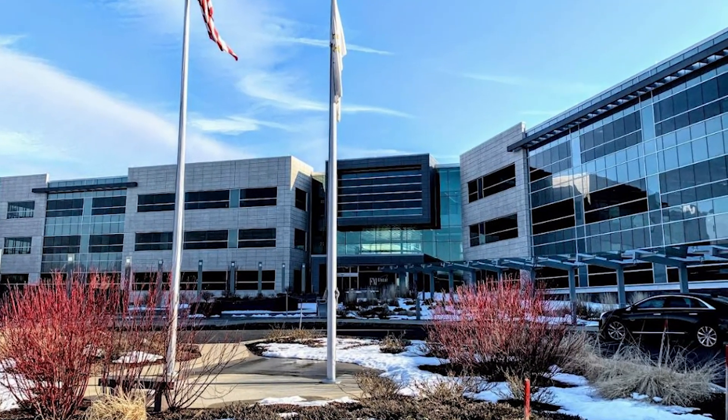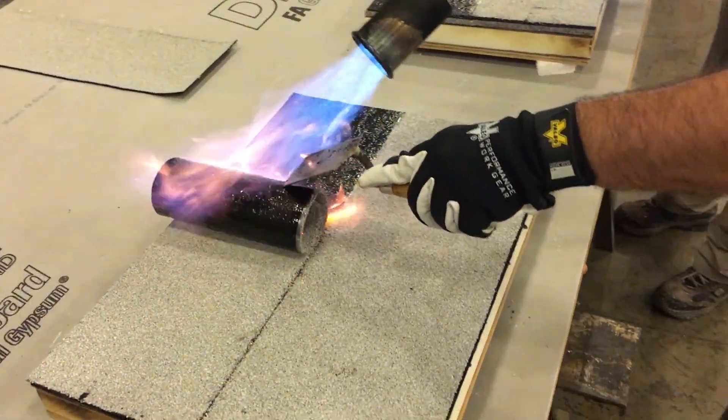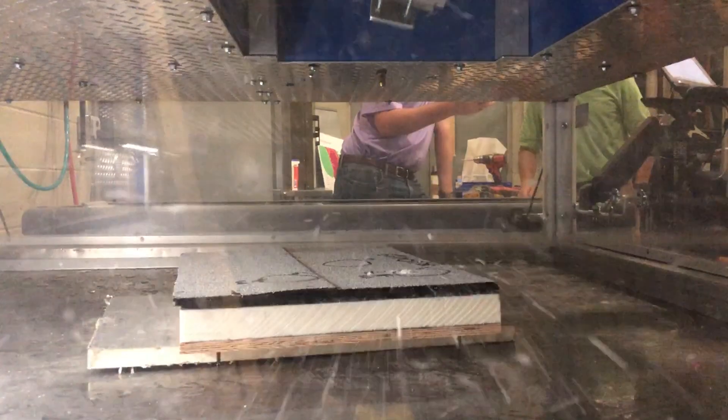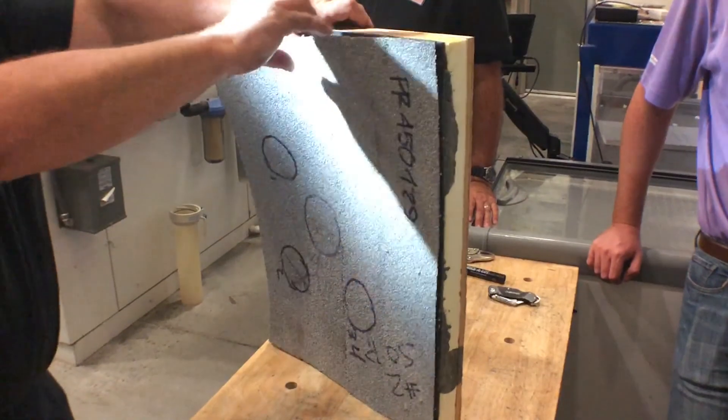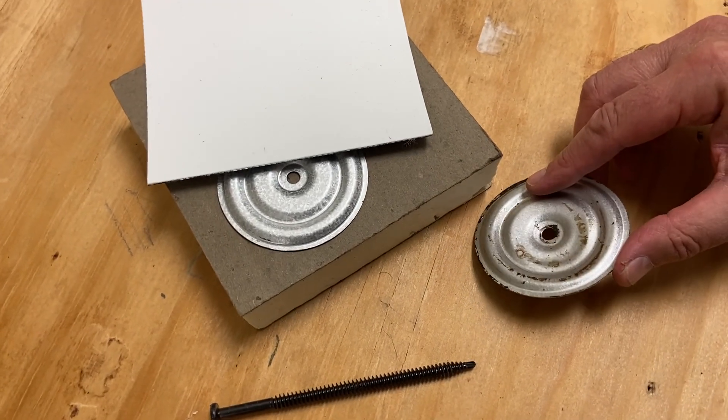FM Global is a commercial property insurance company. FM introduced a stringent impact test that consists of shooting preformed ice balls into roofing samples. Roof systems that pass the FM test receive a Very Severe Hail rating from FM.